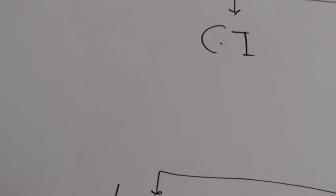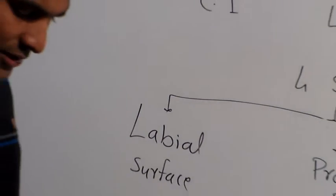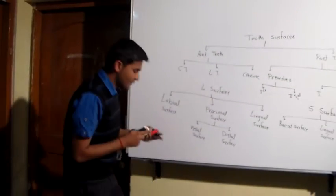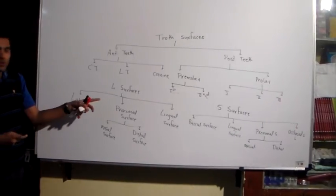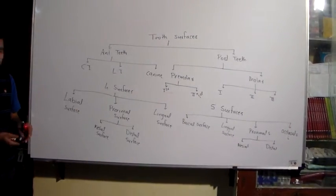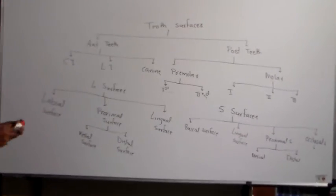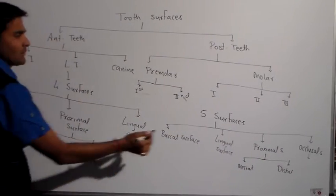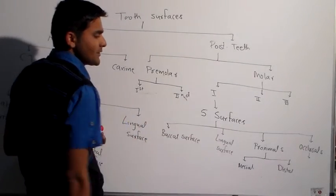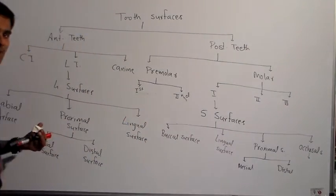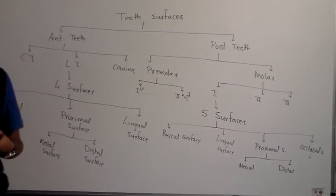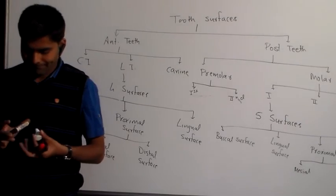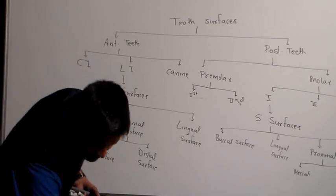So these are all the surfaces to remember. In your exam, the most commonly asked point is: anterior teeth have only four surfaces, while posterior teeth have five surfaces. Thank you very much for listening.